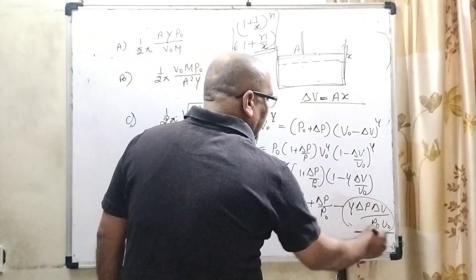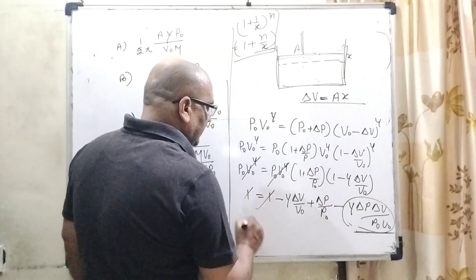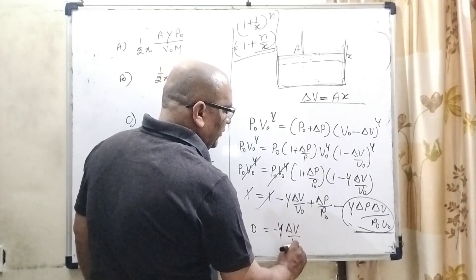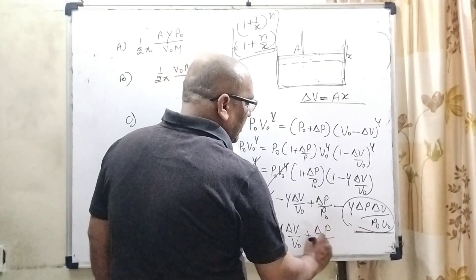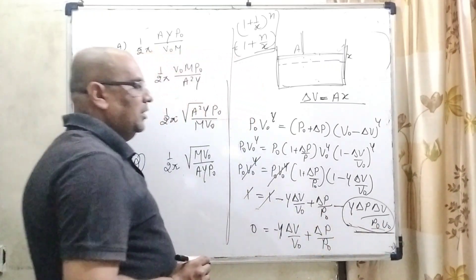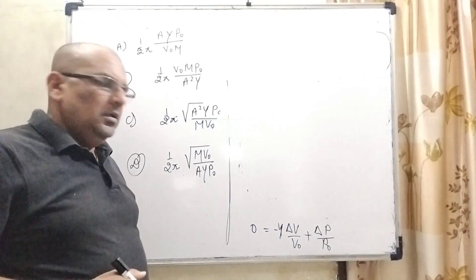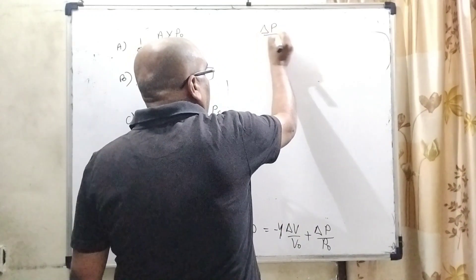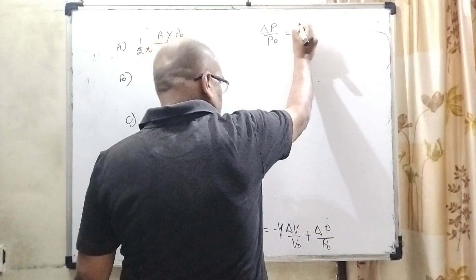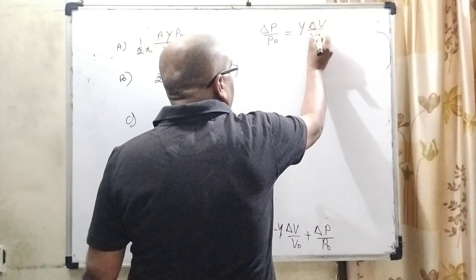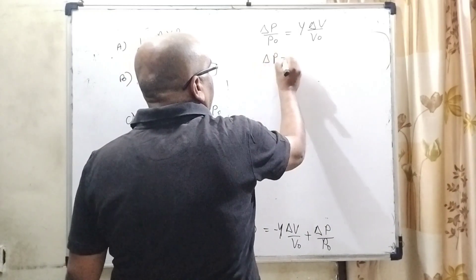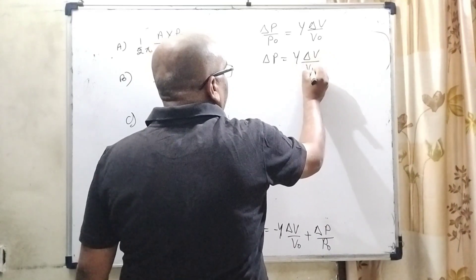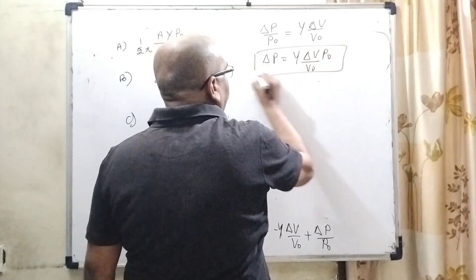Neglecting the higher-order term, and cancelling the ones, we get: −γ·ΔV/V0 + ΔP/P0 = 0. Transposing the terms, ΔP/P0 = γ·ΔV/V0, and therefore ΔP = γ·P0·ΔV/V0. This is our expression for the pressure change.